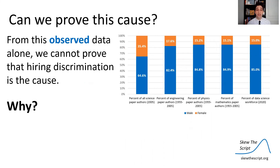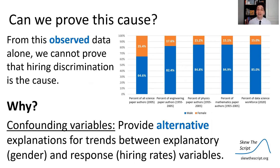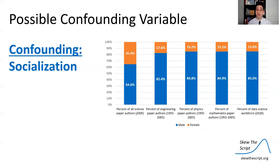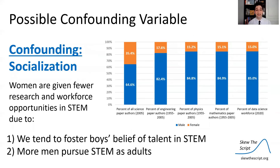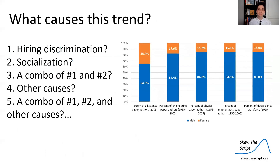However, from observed data alone we cannot prove that hiring discrimination is the true cause, because there are potential confounding variables. Confounding variables provide alternative explanations for trends between explanatory variables — in this case gender — and response variables — in this case hiring rates. One possible confounding variable is socialization: girls at a young age aren't encouraged to pursue STEM subjects, so fewer women choose STEM as adults. Conversely, boys' belief in their STEM talent tends to be fostered. So the true cause could be hiring discrimination, socialization, a combination, or other causes mixed in.